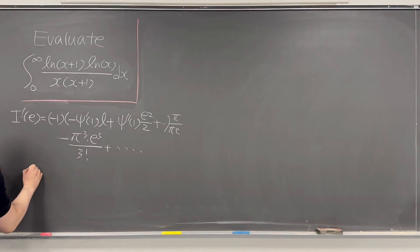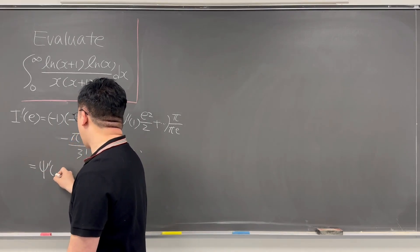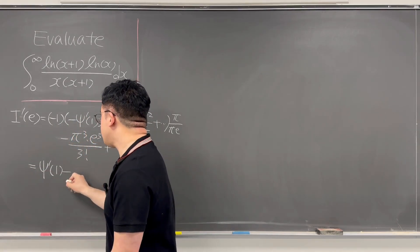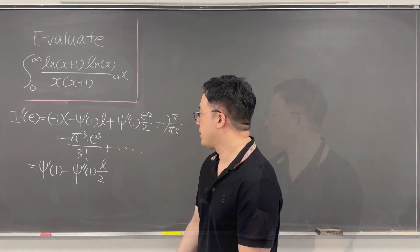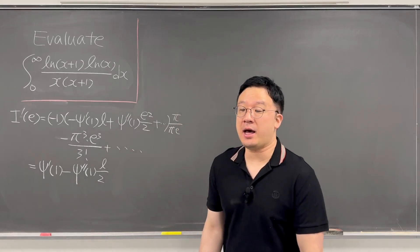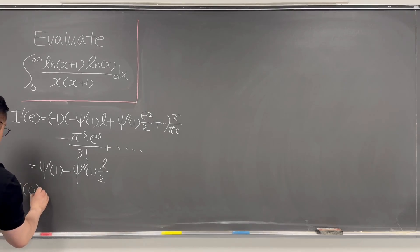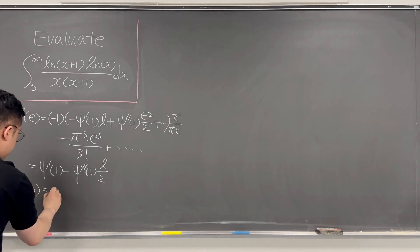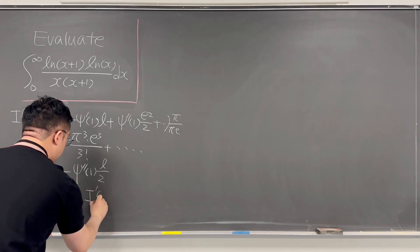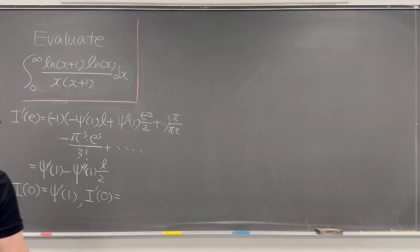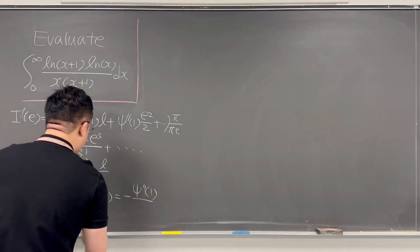So we can rewrite I'(e) as psi'(1) minus psi''(1)·e/2 and so on. Based on this, I(0) equals psi'(1), and I'(0), which is what we're interested in, equals negative of the second derivative of psi(1) over 2.